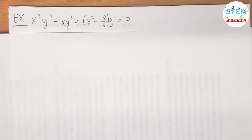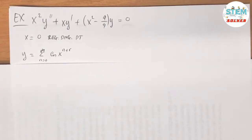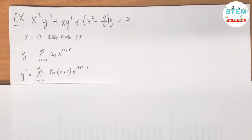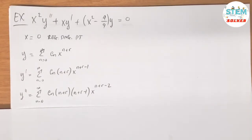We are given that x equals 0 is a regular singular point. So our solution is given in the form y equals the power series from 0 to infinity of cn times x to the n plus r. The first derivative is the sum of cn(n+r) x to the n+r−1, and the second derivative is the sum of cn(n+r)(n+r−1) x to the n+r−2.